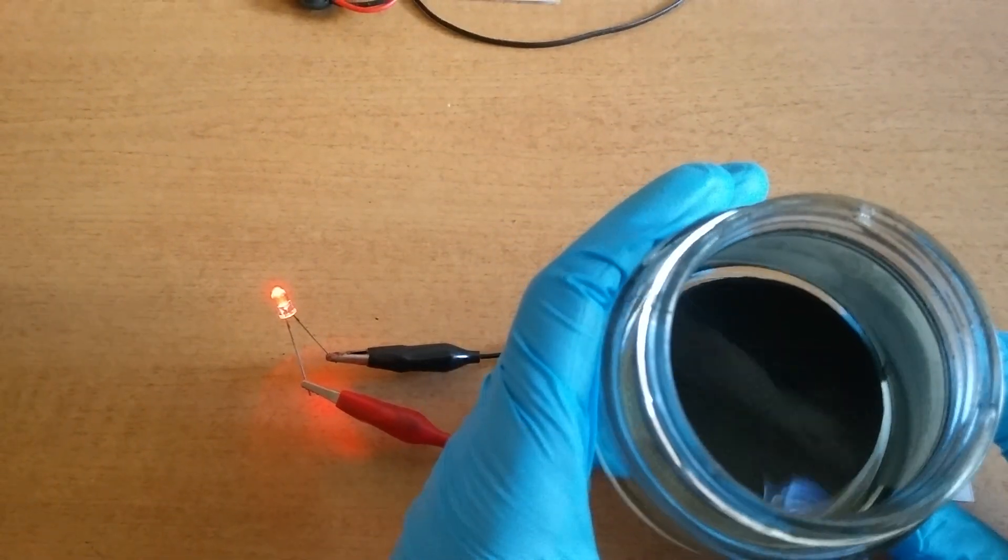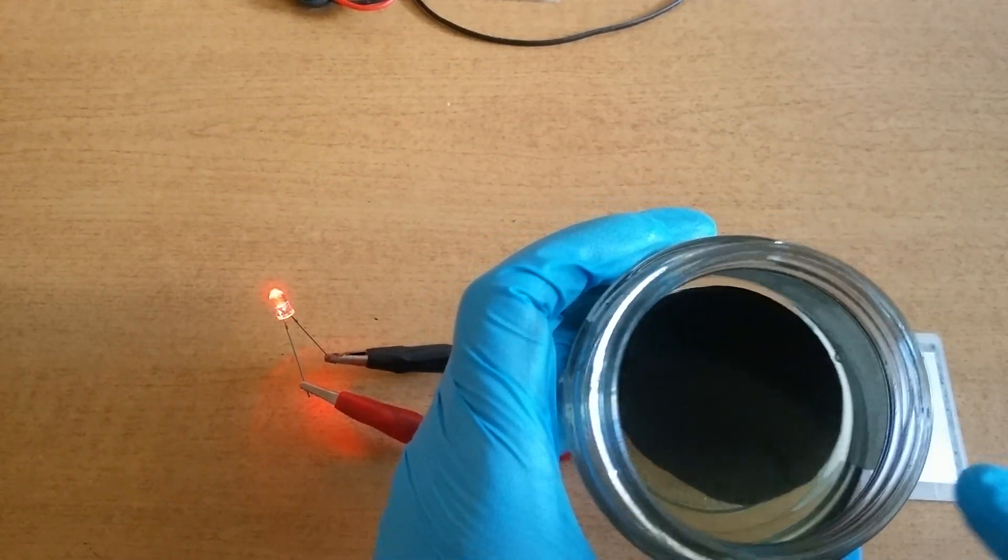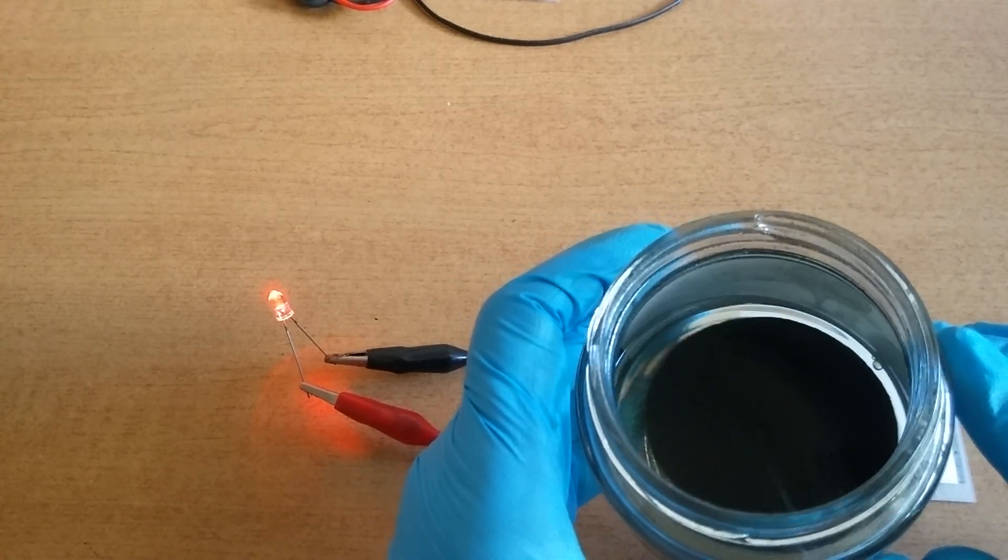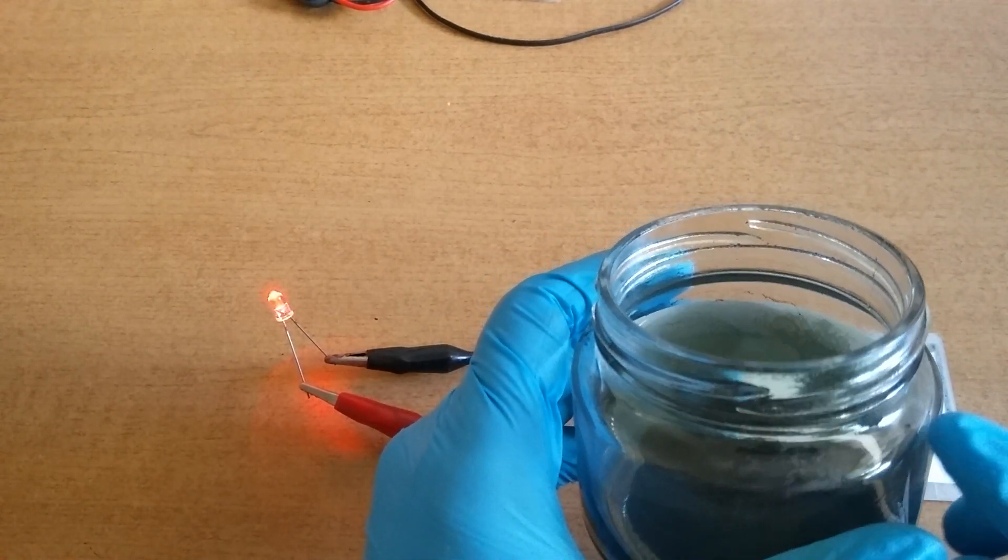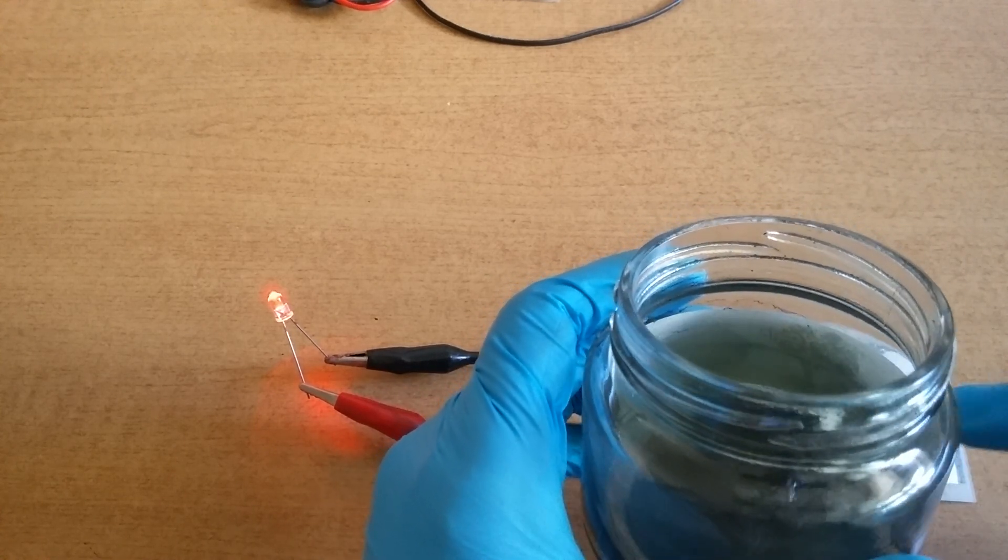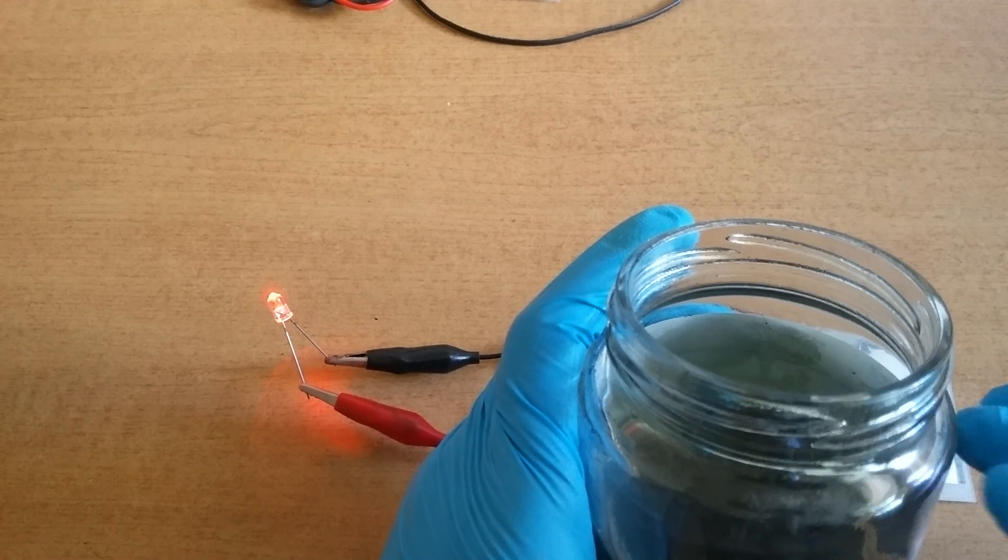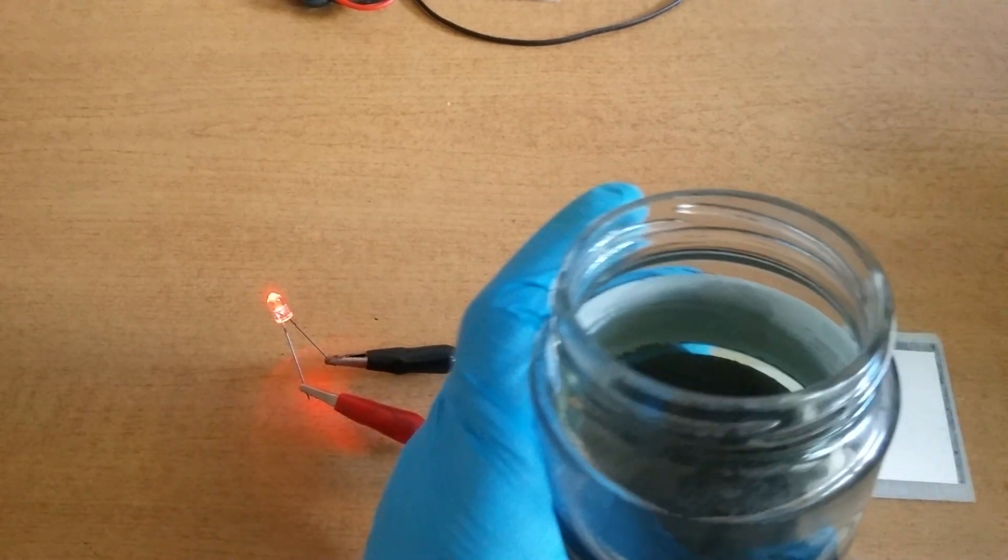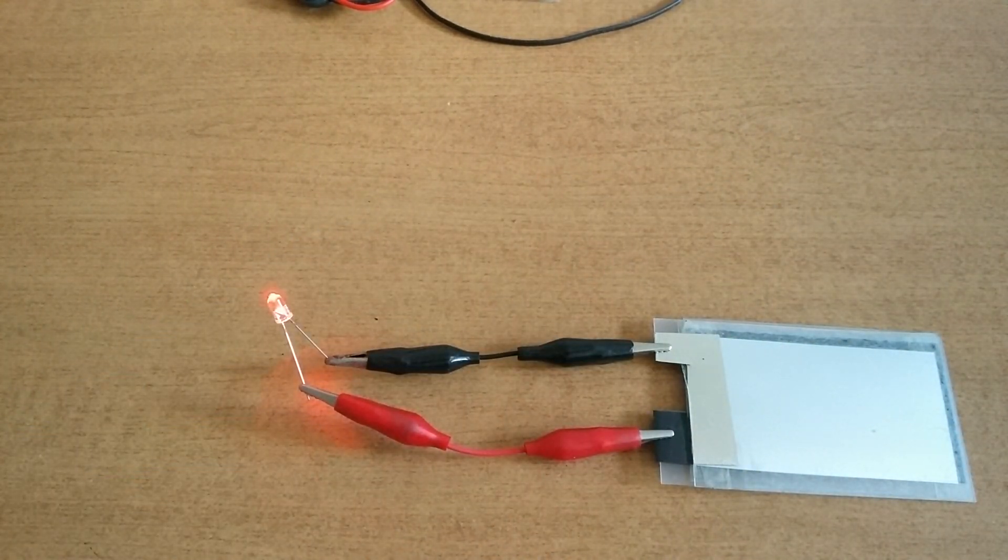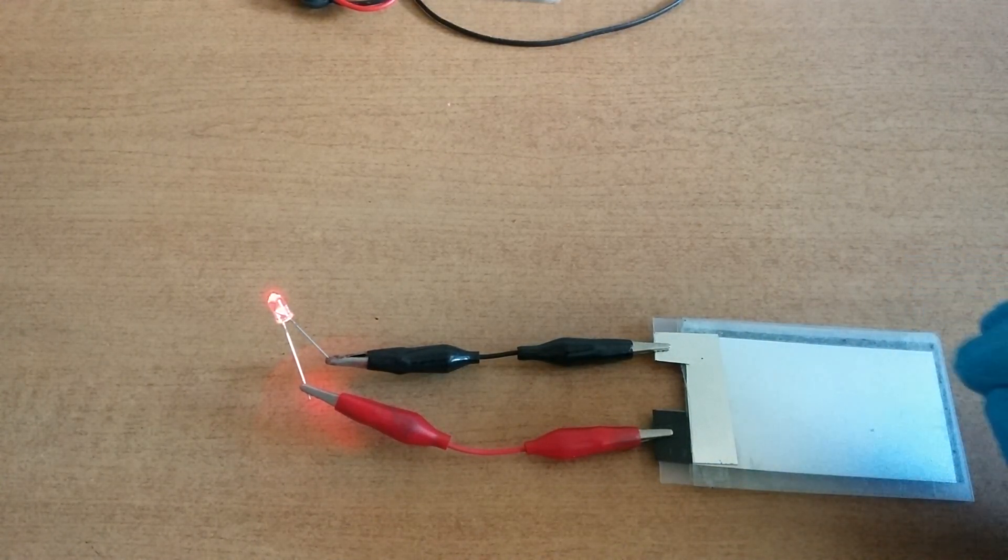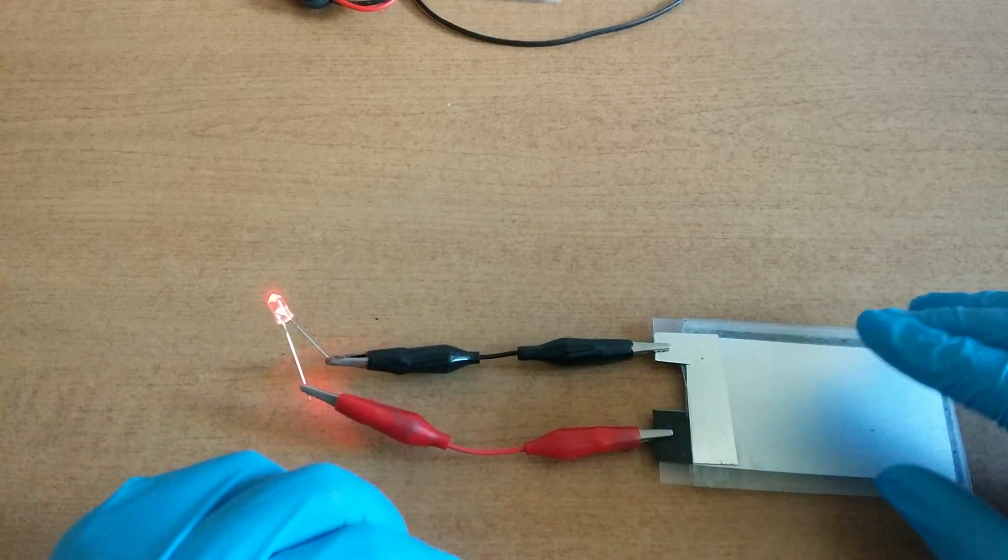In the next experiment, this is peroxide and iron oxide. I'll try this again. Maybe one year ago, about one year ago, I tried to make a battery by using iron oxide. It worked well. I will do the experiment again.